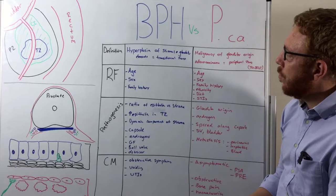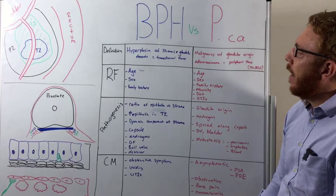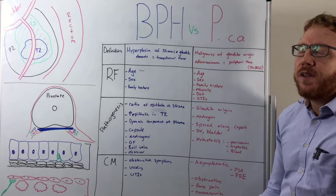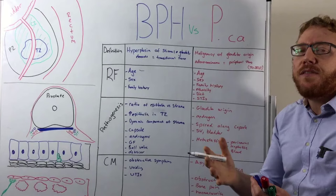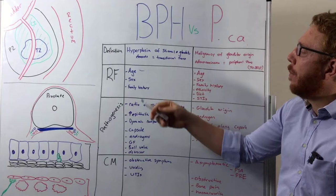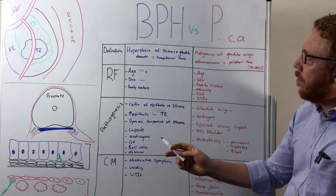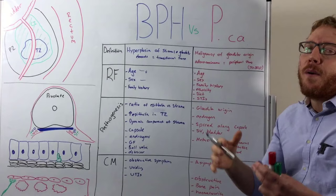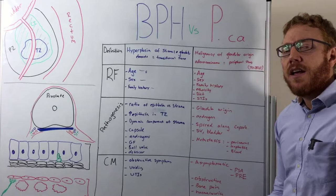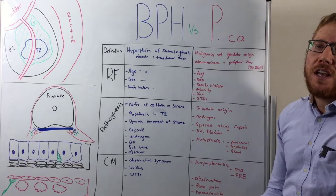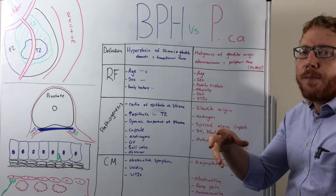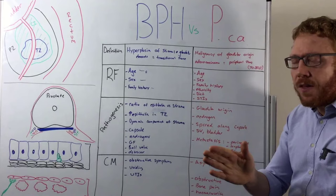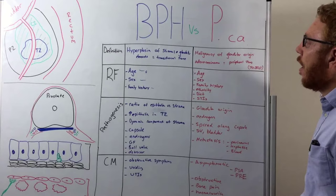In terms of risk factors for BPH, age is by far the biggest risk. At around 30 years old there's about a 10% risk; by 60, about 70%; and by the 80s, roughly 90%. Sex is also a factor, as it really only affects males. Family history is significant — identical twins show about a 300% increased chance if one has it, and a first-degree relative like a brother or father having it before age 60 increases risk six-fold.